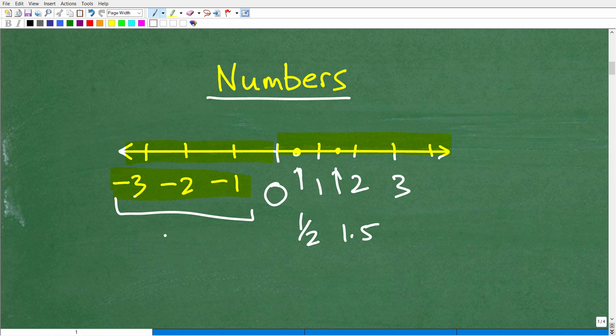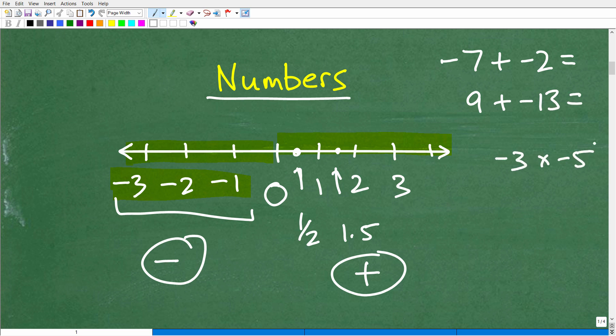You have to understand how to work with both negative numbers and positive numbers in algebra. So if you are struggling with this, again, I have tons of stuff, tons of videos on working with positive and negative numbers. But you have to understand how to do things like negative 7 plus negative 2. What's that equal to? Or 9 plus negative 13. Or negative 3 times negative 5. So, this is kind of like some prerequisite steps before you can really get heavy duty into algebra. We need to now start understanding more about numbers. Positive and negative numbers and all the rules. How to add, subtract, multiply, and divide numbers.